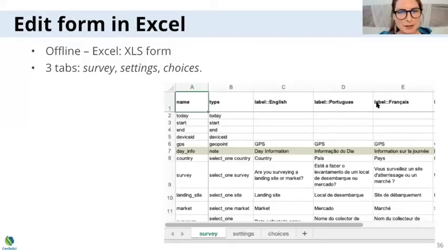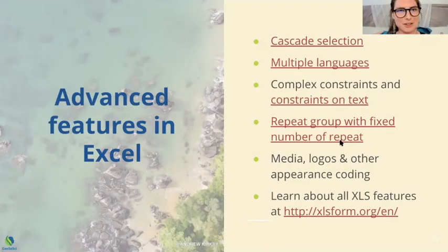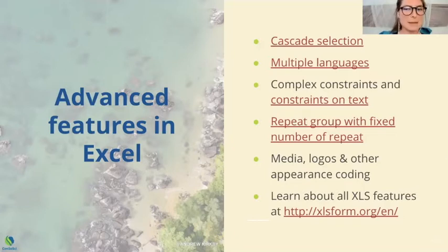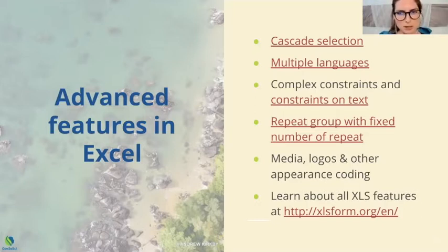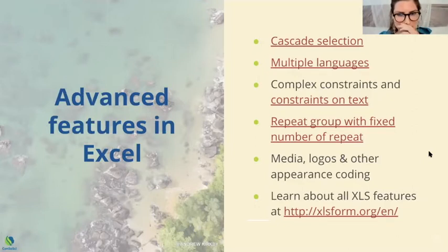So you can set up cascade selections, which is when you want certain response options to be displayed depending on the response to a previous question. This is really handy when you fill a form. You can set up your form in as many languages as you'd like. You can add pretty complex constraints to responses — for example, when you have multiple choice questions, you can prevent some responses from being selected together depending on what makes sense for that particular question, which is very handy. You can also set the number of times you want a group of questions to be repeated if you set your form to do that.